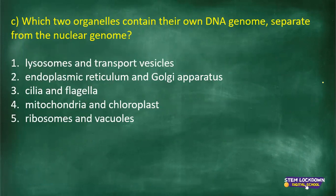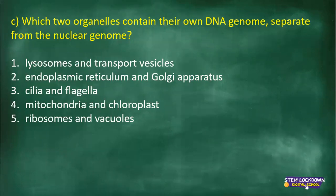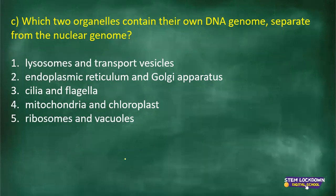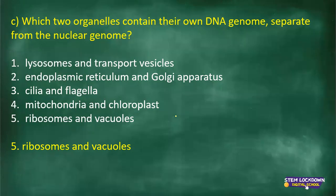Which two organelles contain their own DNA genome, separate from the nuclear genome? It is the ribosomes and the vacuoles — they have their own DNA genome separate from the nuclear genome.